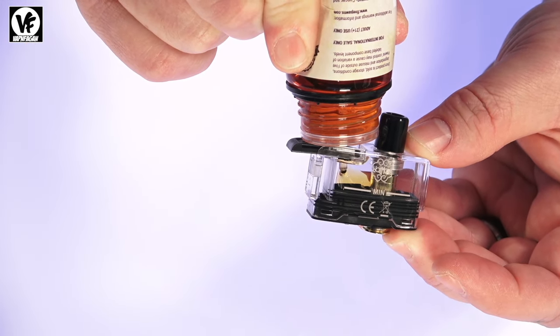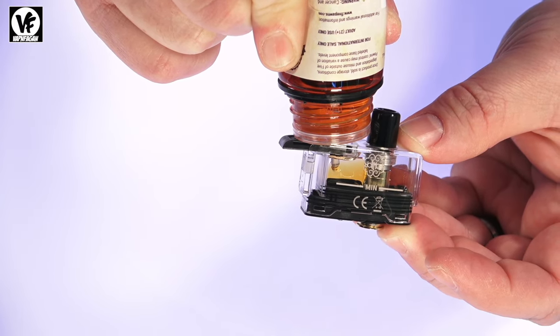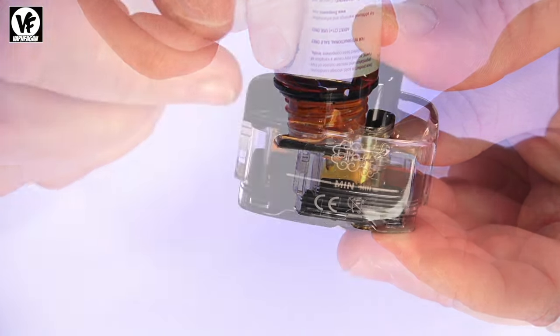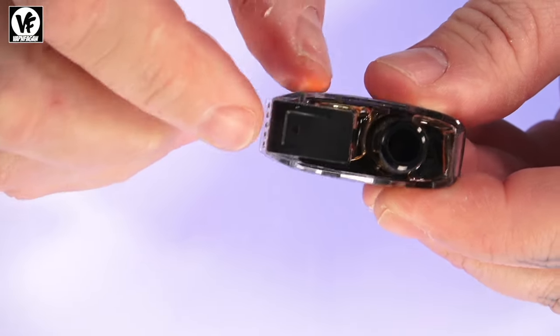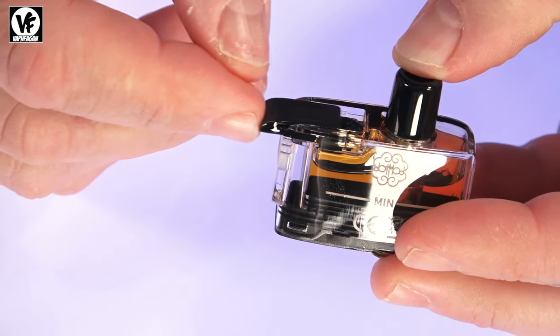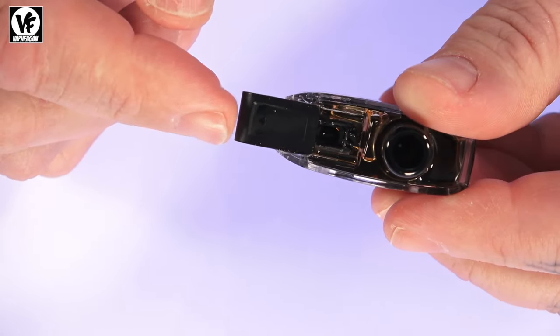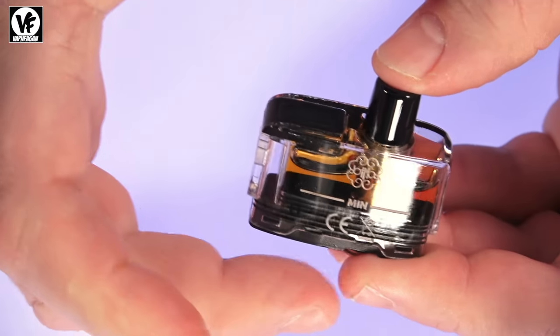Five mils of liquid - this thing holds a ton of liquid for a pod system. Once you fill it up and get a little liquid on the door, the door slides open super easily. So you just got to be careful that if you have this in your pocket or something like that, that this door doesn't end up sliding open and this thing ends up flooding.